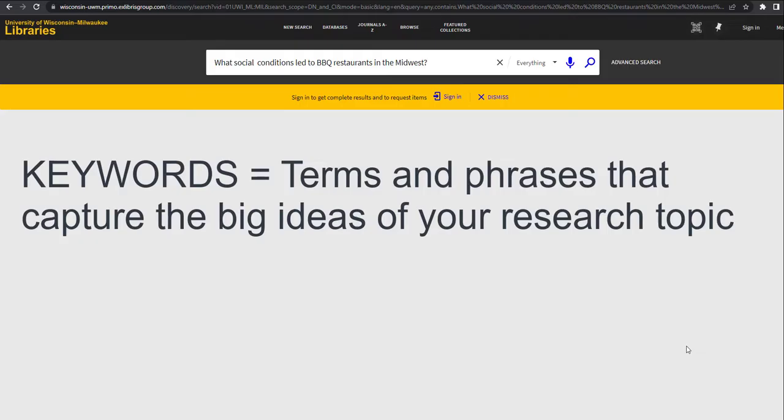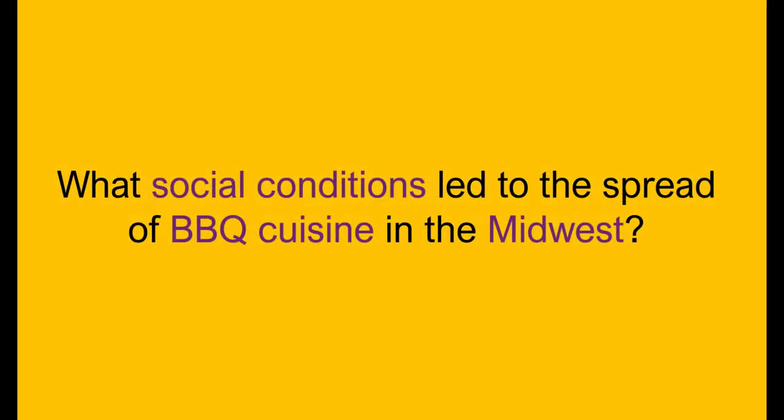Keywords are terms or phrases that capture the big ideas of your research topic. To develop a list of keywords, start breaking your research question down into important concepts. For the research question, "What social conditions led to the spread of barbecue cuisine in the Midwest?" we can break down our question into three main concepts.